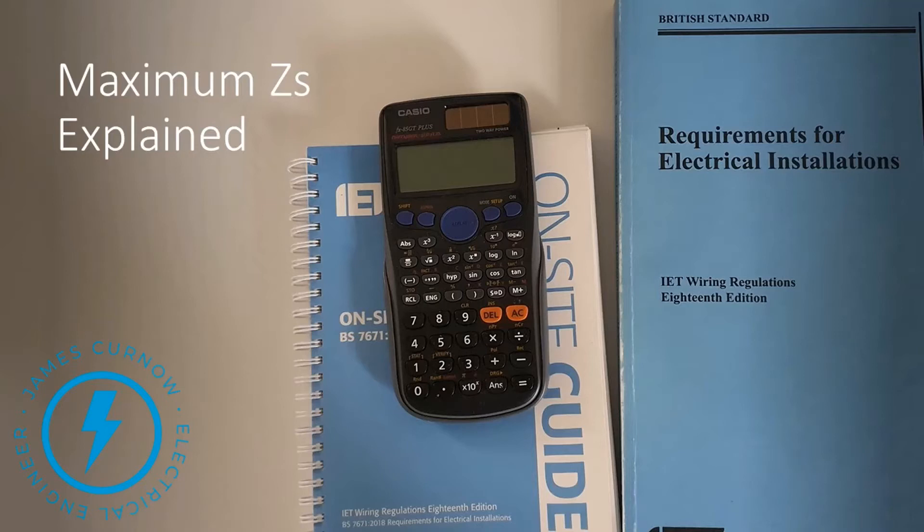In this video, I'm going to be talking about maximum Zs. So if you've ever wondered, which is the maximum Zs? Is it the value in table 41 in the Wiring Regulations? Is it the value in the on-site guide? Do I need to calculate it? And why are the values all different? I will explain the differences in this video.